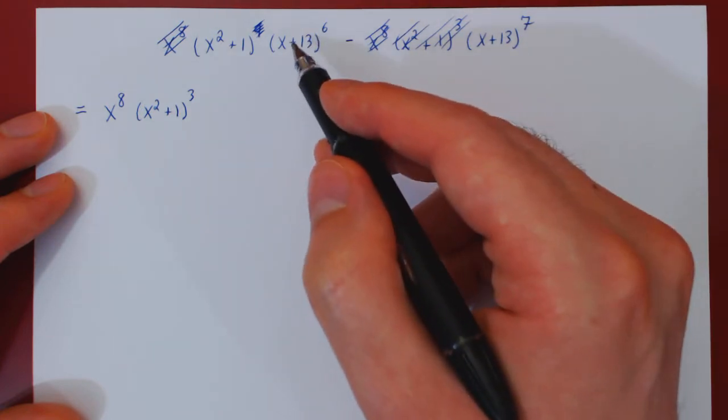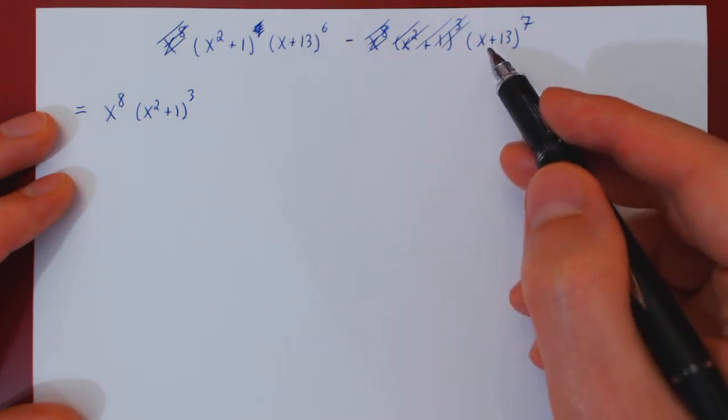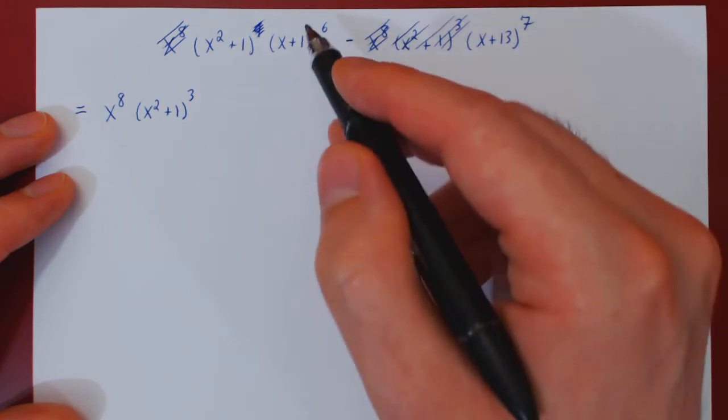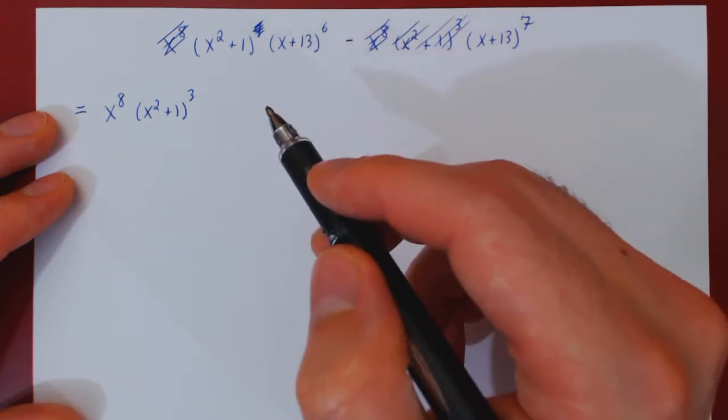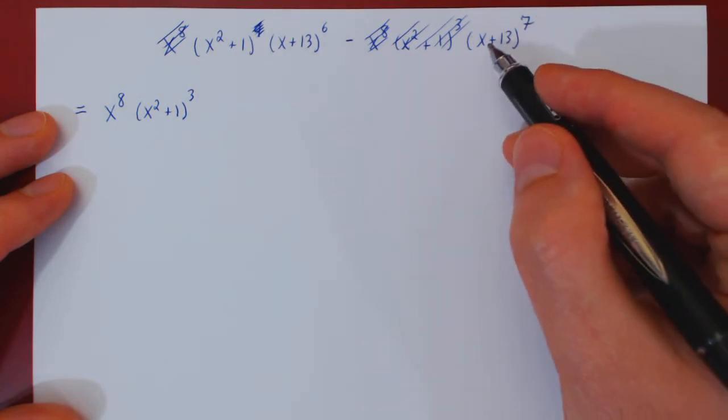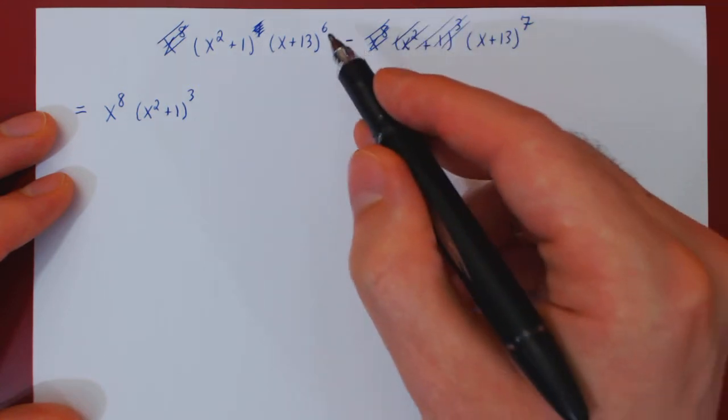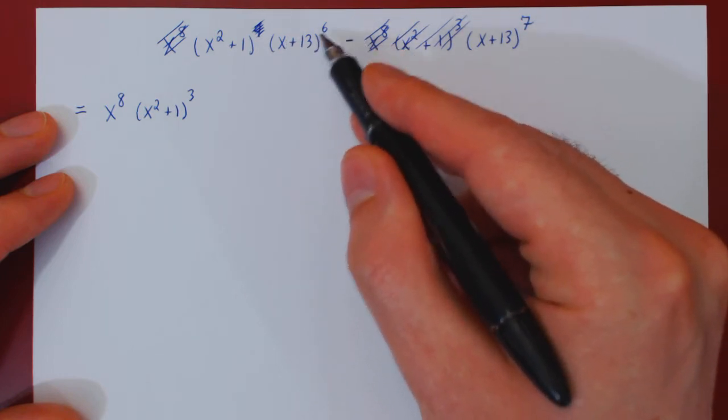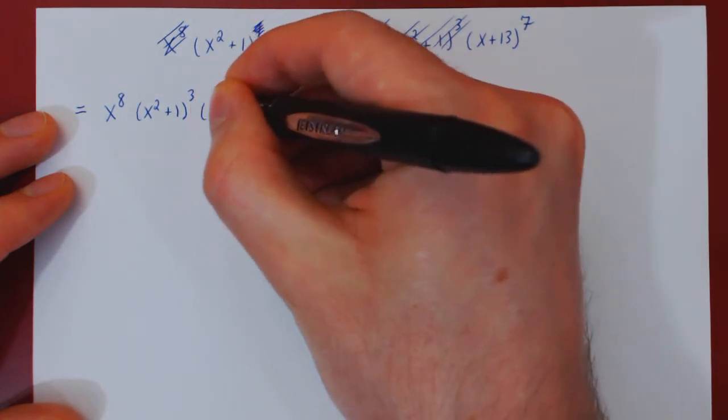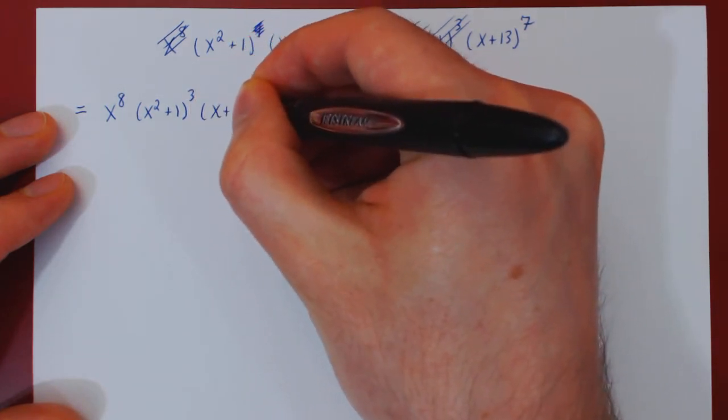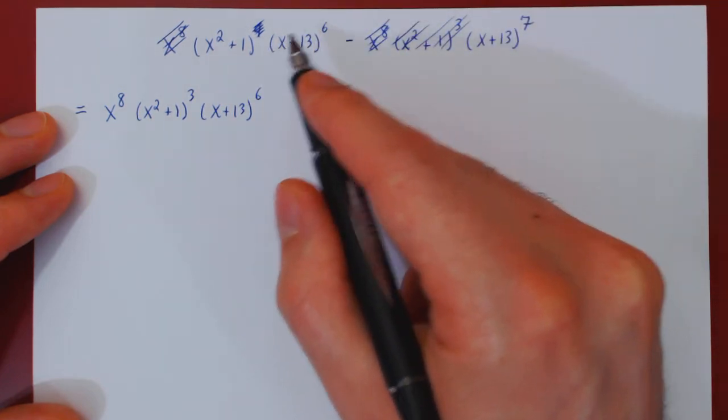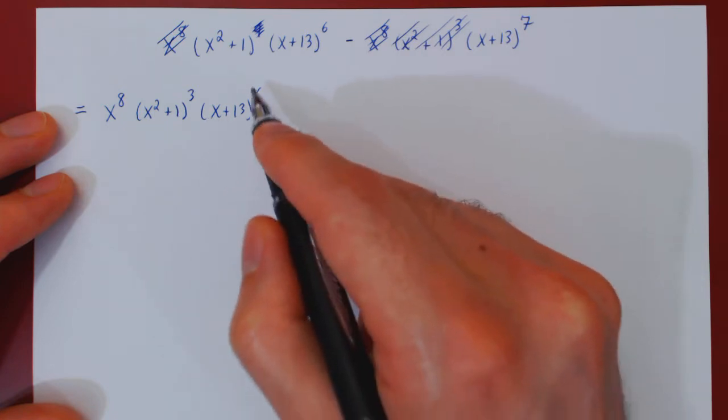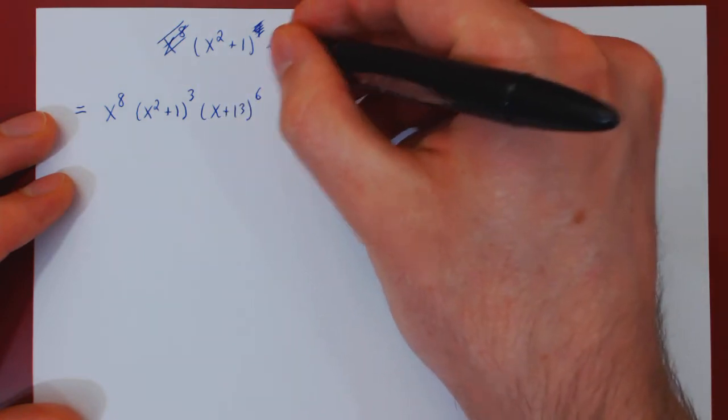And there's also another factor that is x plus 13, both in the first and second terms. x plus 13 shows up 6 times in the first factor, 7 times in the second factor. So the best we can do is factor x plus 13 6 times. Well, there were 6 factors of x plus 13 in the first term. We took everything away, so this term is gone.